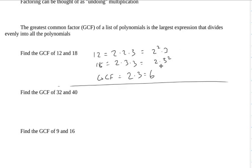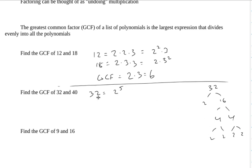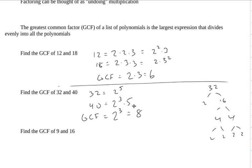This prime factorization technique is the way you're going to want to look at finding the greatest common factor of polynomials. Let's do 32 and 40. 32 is 2 to the 5th, and 40 is 8 times 5, which is 2 cubed times 5. Looking through the bases: for 2s, this one has 5 copies and this one only has 3, so I'm limited to 3. For 5s, there are no 5s in 32, so it's not a common factor at all. So the greatest common factor of 32 and 40 is 8.